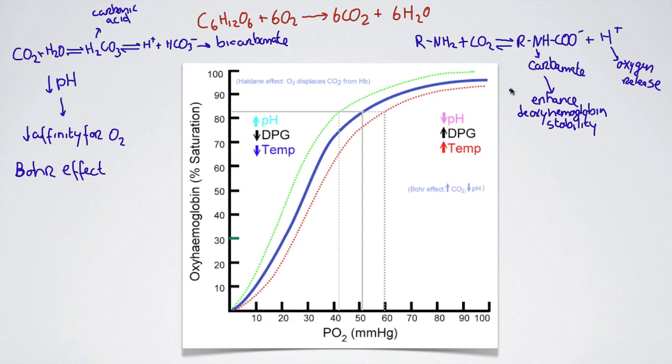So you can see carbon dioxide is doing this in two ways. It's doing it by decreasing the pH. It's doing it by producing carbamate. And that is going to enhance the deoxyhemoglobin stability. In other words, it's more stable without oxygen. So it's going to release oxygen. And you're going to get this Bohr effect, or the Bohr shift, where the graph moves to the right.